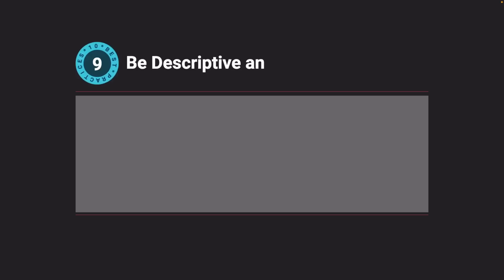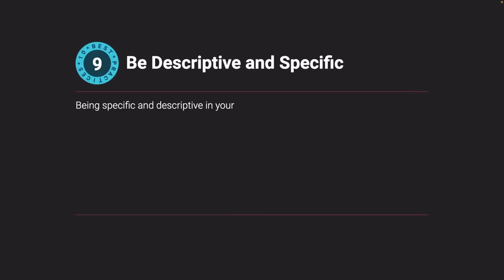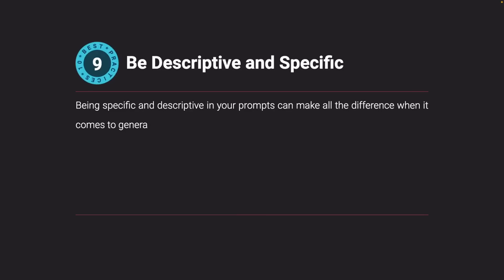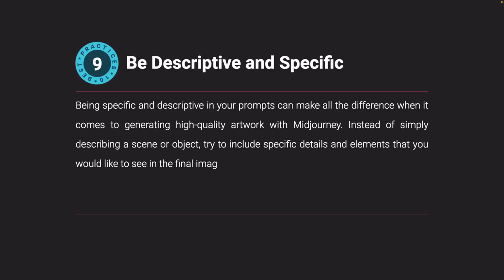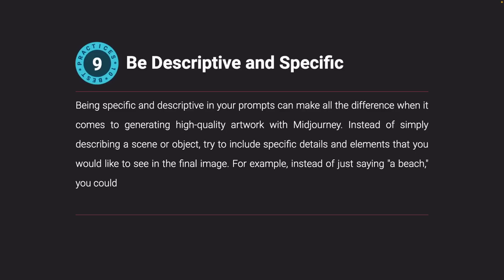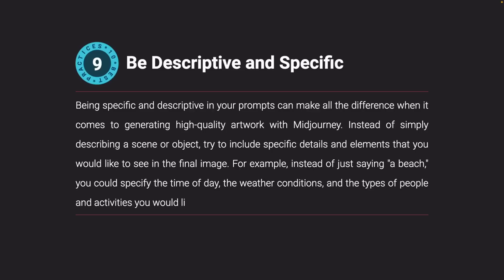Be descriptive and specific. Being specific and descriptive in your prompts can make all the difference when generating high-quality artwork with Midjourney. Instead of simply describing a scene or object, include specific details and elements you'd like to see. For example, instead of just saying 'a beach,' you could specify the time of day, weather conditions, and the types of people and activities you'd like to see on the beach.